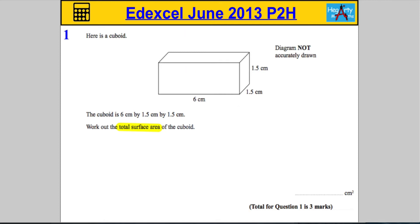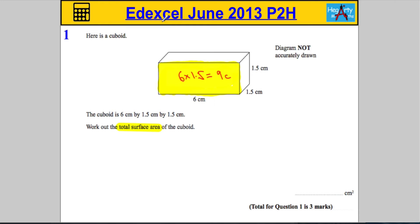Starting with the front face, highlighted in yellow, which is a rectangle. There's an identical face on the back of the cuboid. The area of a rectangle is base times height, so we do 6 times 1.5, which gives us 9 centimeters squared.